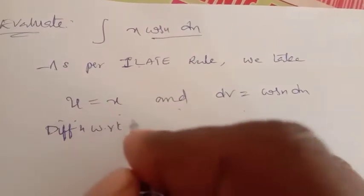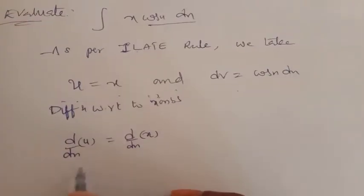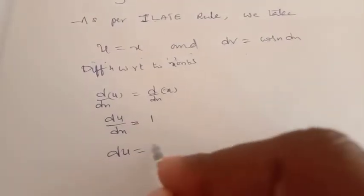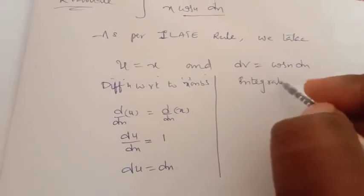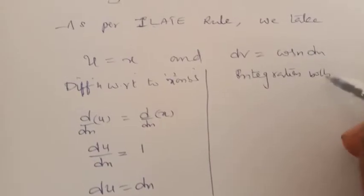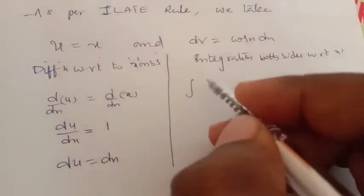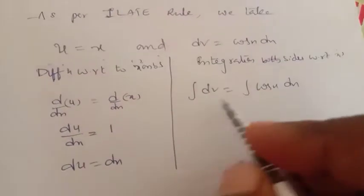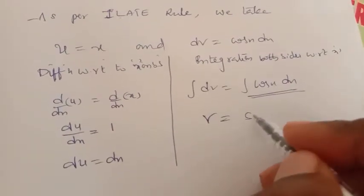Differentiating with respect to x on both sides: d by dx of u equals d by dx of x, so du by dx equals 1, and by cross multiplication we get du equals dx. Now integrating the second function with respect to x: integral dv equals integral cos x into dx. We have the formula integral cos x dx equals sin x plus c.